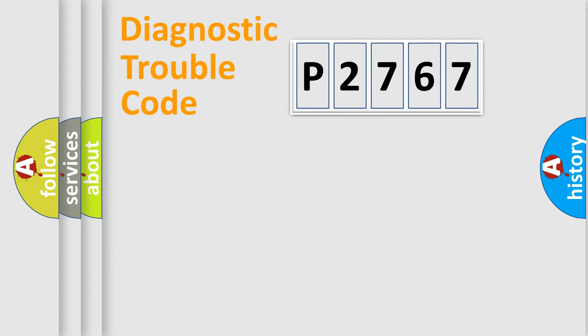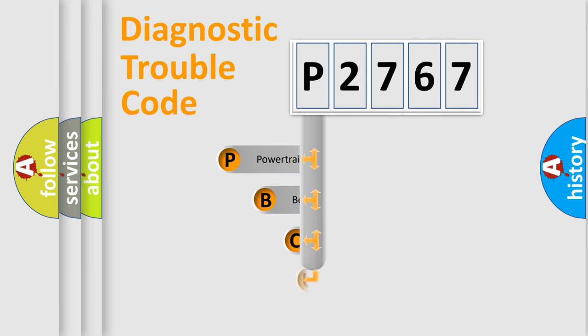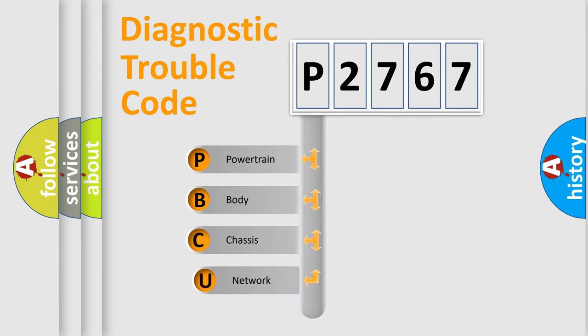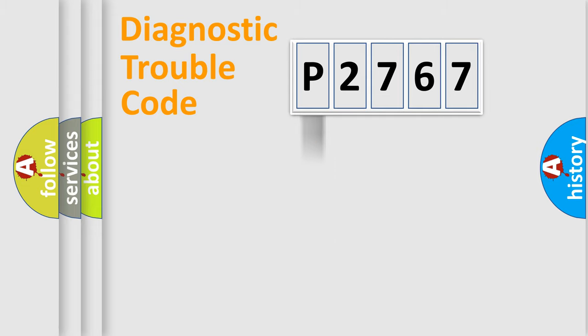First, let's look at the history of diagnostic fault code composition according to the OBD2 protocol, which is unified for all automakers since 2000. We divide the electric system of an automobile into four basic units: Powertrain, Body, Chassis, and Network.